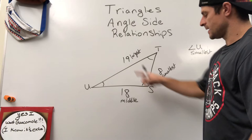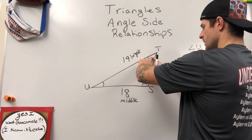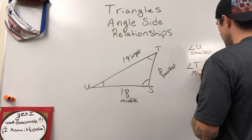I'm just going to list them out in order. Next we go from 8 to 18 and then 19. 18 being the middle one, we're just going to go across the triangle to this opposite angle, which is angle T. Angle T would be our middle angle.